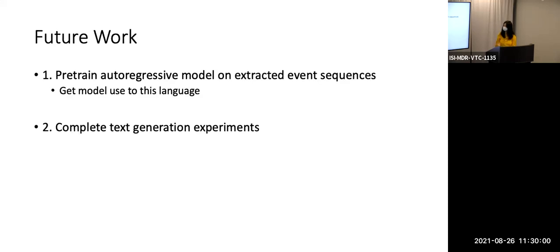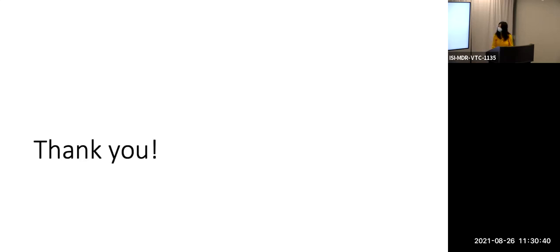For future work, we can expand on this. The first thing is to pre-train the autoregressive model on more event processes. There are some datasets available from the New York Times, and using that we can possibly get the model more fluent in process language. We also need to finish the text generation experiment and possibly use some other control models to compare with our setting, to see if it's actually leveraging the sequence information. That's basically my presentation.